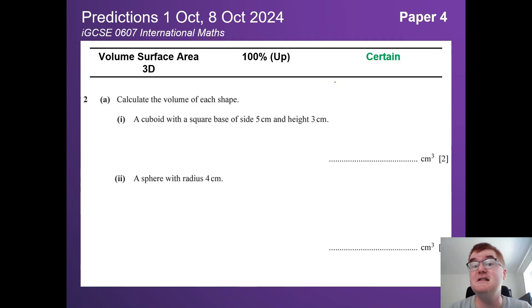The first thing here is volume and surface area, or 3D shapes, slightly up at 100%, so sneaks into the certain category. This is usually one big, long question with lots of different parts involved. You can see here the starter question where you have to work various volumes and surface areas together. Make sure you revise.